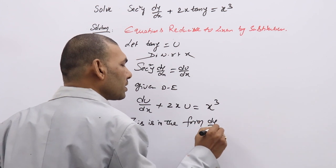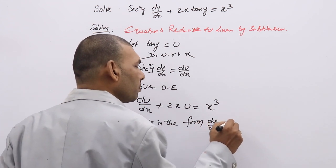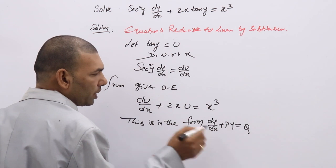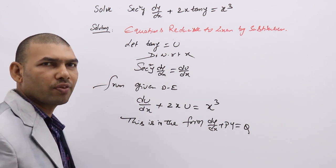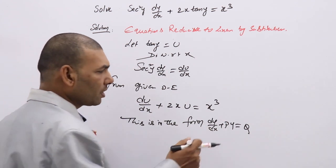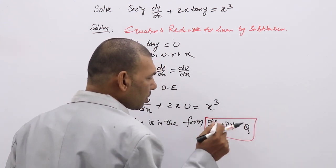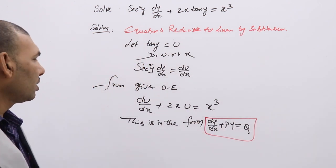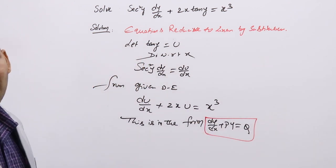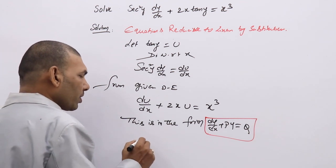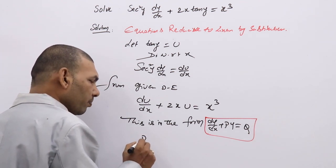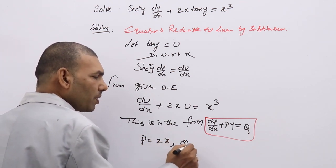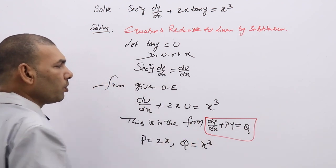This is in the form dy/dx + py = q — here in the place of y, we have u; there is no difference. By comparing with the standard form of the linear differential equation, we get p = 2x and q = x³.